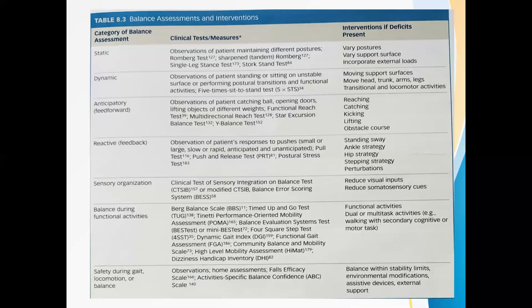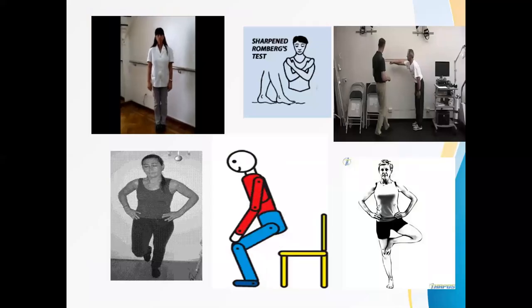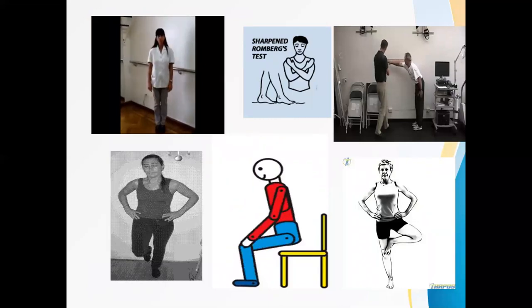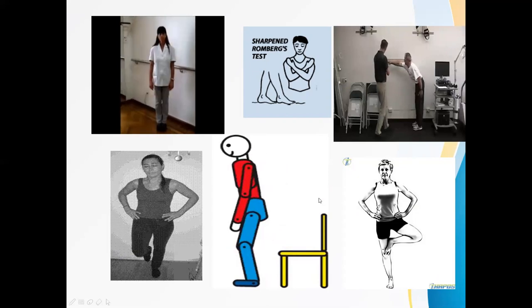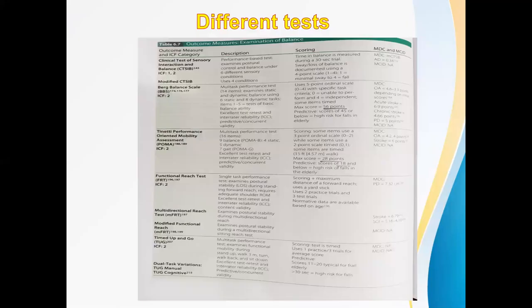Different tests include the Berg Balance Scale and timed up-and-go test. Safety during gait, locomotion, or balance is obviously essential during examination. Interventions include balance within stability limits and environmental modifications. Pictures shown include the Romberg test, Sharpened Romberg, functional reach, stork stand test, sit-to-stand test, and single leg stance test. The table provides descriptions and scoring of these different tests.